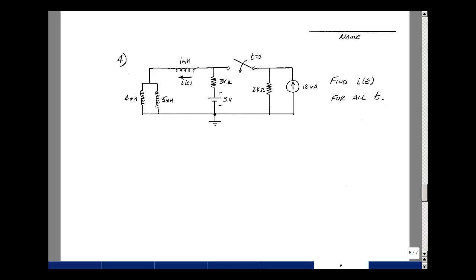For problem 4, given a single-pole, single-throw switch, can you find the current in this inductor, I(t), for all time?